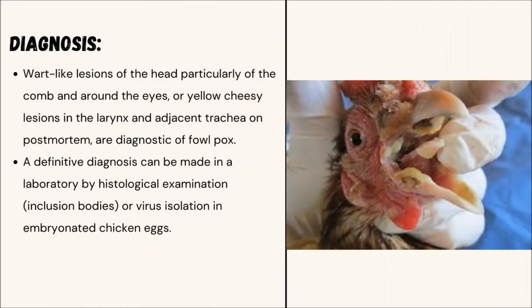Diagnosis: Wart-like lesions of the head, particularly of the comb and around the eyes, or yellow cheesy lesions in the larynx and adjacent trachea, are diagnostic of Fowl Pox on postmortem. A definitive diagnosis can be made in the laboratory by histological examination or virus isolation in embryonic chicken eggs.